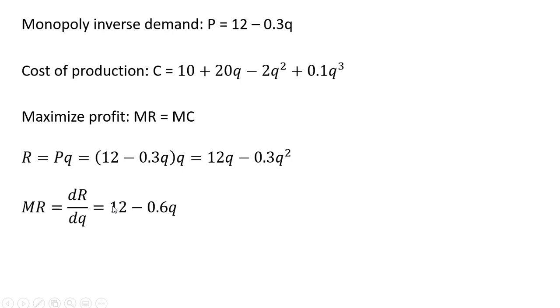We take the derivative of that revenue function with respect to q and we get back this result. The derivative of 12q is 12, and the derivative of minus 0.3q squared is going to be minus 0.6q. You take this 2 on this exponent and bring it down in front. That's where the 0.6 is coming from, 2 times 0.3, and then we subtract 1 from that exponent, leaving us with just q.